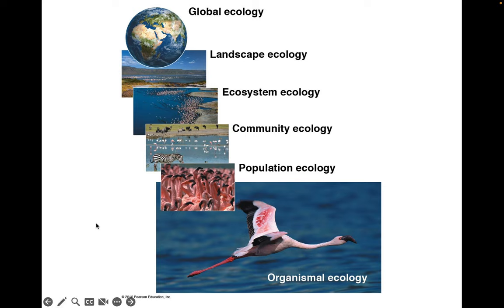When we study ecology, we do so in a hierarchical framework. The most specific or narrow field is organismal ecology, where we might study a single individual or a handful of individuals. Above that is population ecology, then community ecology where different populations interact with each other, and ecosystem ecology involving different communities and their environment. Landscape ecology operates at a larger scale, and global ecology addresses ecological patterns or processes that happen on the scale of the whole planet.